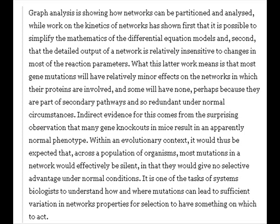Indirect evidence for this comes from the surprising observation that many gene knockouts in mice result in an apparently normal phenotype. Within an evolutionary context, it would thus be expected that across a population of organisms, most mutations in a network would effectively be silent, in that they would give no selective advantage under normal conditions. It is one of the tasks of systems biologists to understand how and where mutations can lead to sufficient variation in networks' properties for selection to have something on which to act. Combine this with population effects: the population can accumulate many of these sneaky variants that have no significant effect on most individuals, but under conditions of strong selection, combinations of these variants that together can have detectable effects can be exposed to selection.